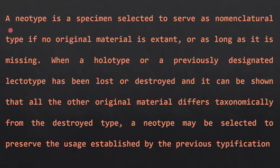Next, the neotype. A neotype is a specimen selected to serve as the nomenclatural type when no original material is extant or as long as it is missing. When a holotype or a previously designated lectotype has been lost or destroyed, and it can be shown that all other original material differs taxonomically from the destroyed type, a neotype may be selected to preserve the usage established by the previous typification.